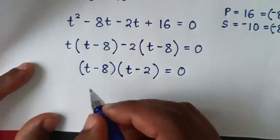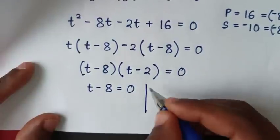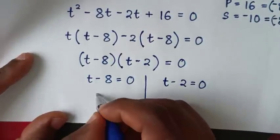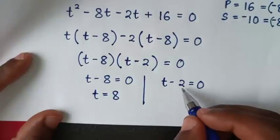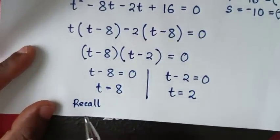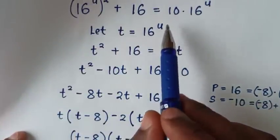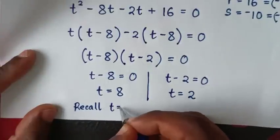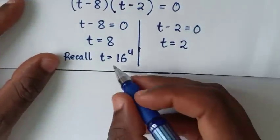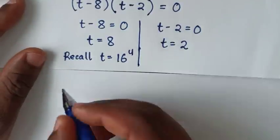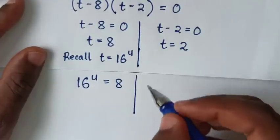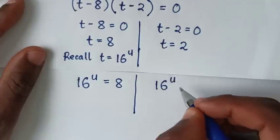From here we have two solutions. The first solution: t minus 8 equals 0, and the second solution: t minus 2 equals 0. From the first solution, t is equal to 8, and from the second, t is equal to 2. Recalling that we let t equal to 16 power of u, from the first solution 16 power of u equals 8, and from the second solution 16 power of u equals 2.